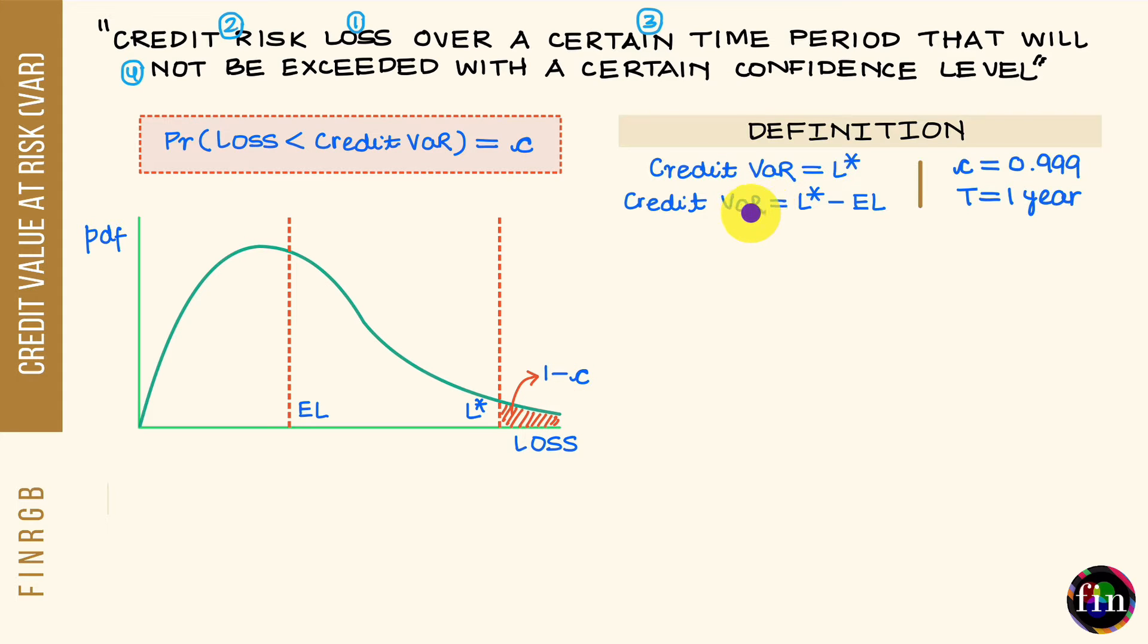Now typically when it comes to credit VAR, we choose our level of confidence to be 99.9% and we choose our horizon to be 1 year. This means that L star which is read as per this chosen level of confidence is that loss number which will be exceeded only in 1 out of 1000 cases.